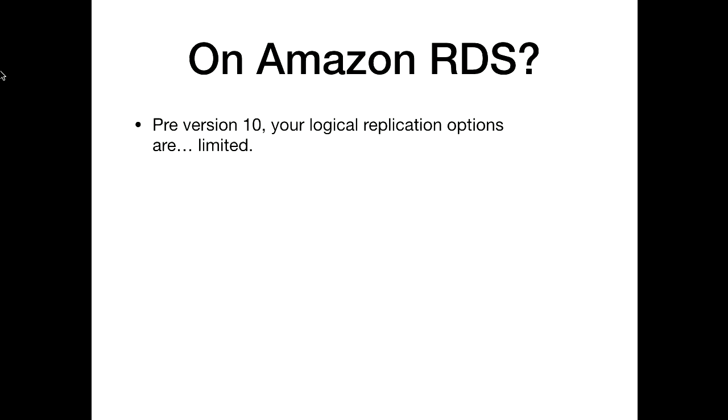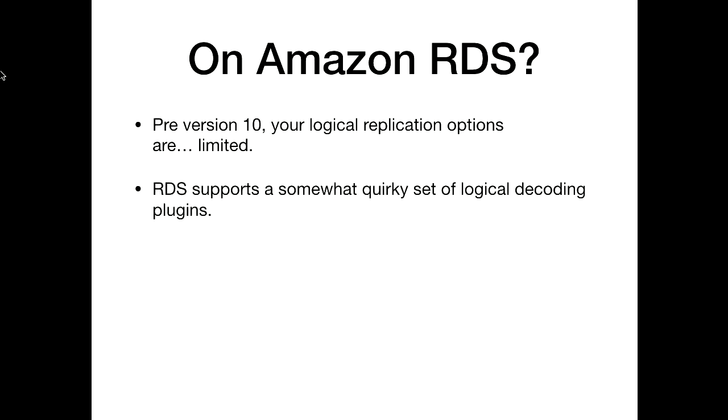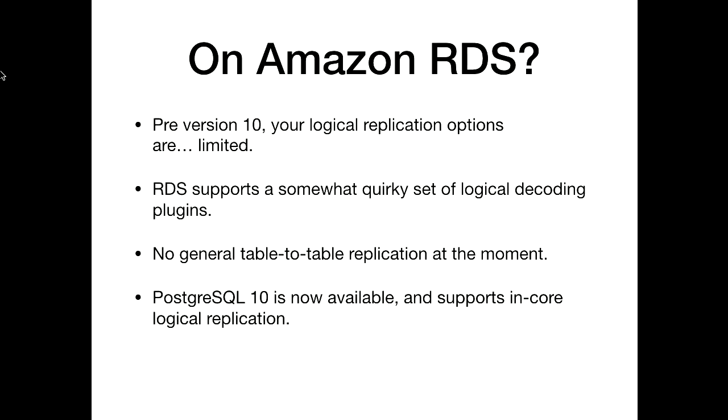If you're on RDS version 10, your logical replication options are somewhat limited. RDS supports a quirky set of logical replication plugins — specifically it doesn't have any kind of generalized table-to-table replication. But Postgres 10 is now available on RDS and it does support in-core logical replication, so if you're on Postgres 10 on RDS, you do have in-core logical replication available to you.